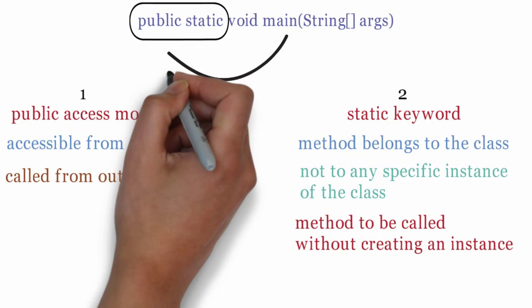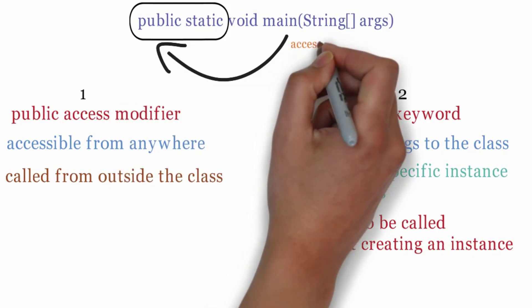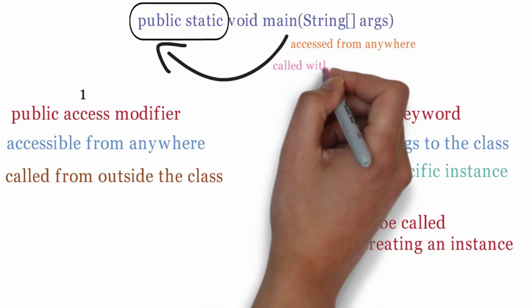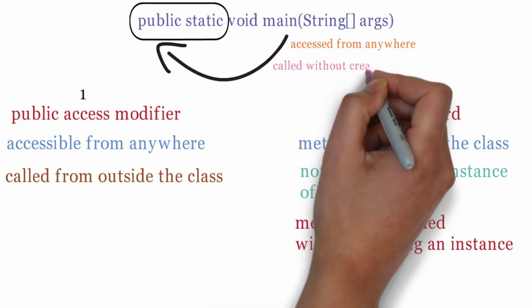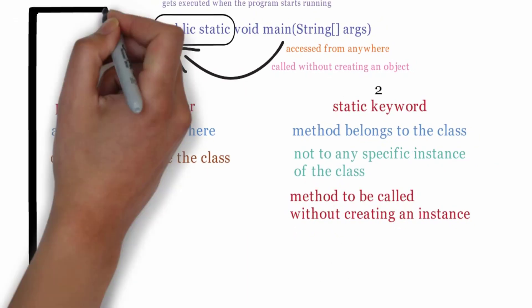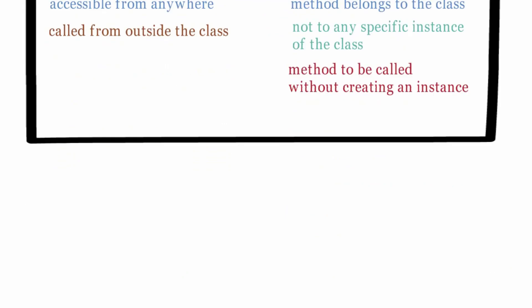By making main method public static it can be easily accessed from anywhere in the program and it can be called without creating an object of the class. This makes it an ideal method to use as an entry point of the program. That's why main method is public static.